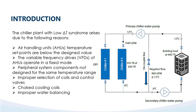This kind of low delta T syndrome arises when components are mismatched. Point number 5: improper selection of coil and control valves for the supply and return temperature. The supply is 6 degrees and return is 12 degrees Celsius. For this temperature range, the coil is supposed to have 4 row coils. If it is 3 row or 2 row, this will lead to low delta T syndrome. Choked cooling coils as well as improper water balancing also lead to this kind of situation.